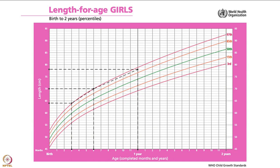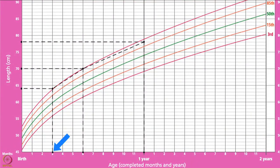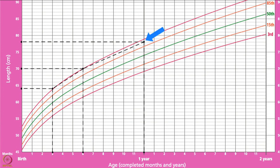Let's use an example to understand plotting on this chart. This graph shows Anita's length for age plotted three times over a few months. At the first point, Anita was three months of age and sixty-four centimetres in length. At the second point, she was seventy centimetres in length at six months of age. Finally, she was seventy-eight centimetres in length at one year of age.